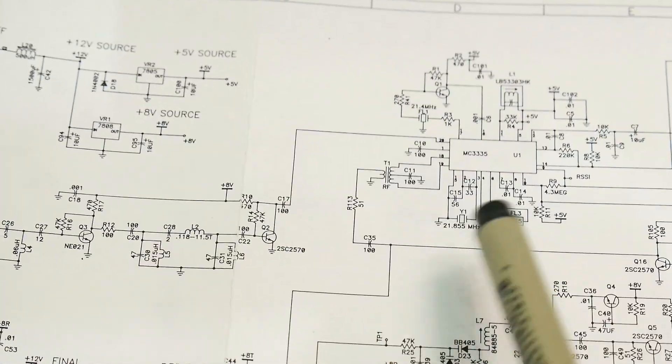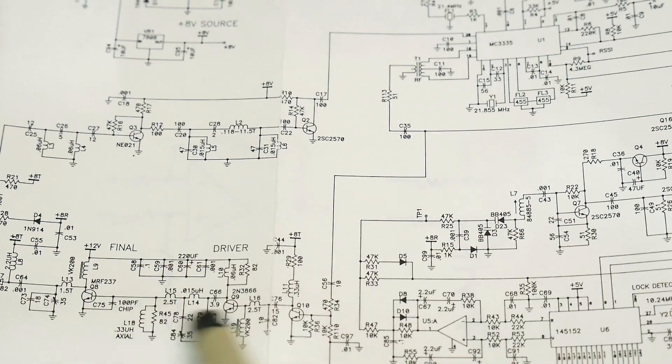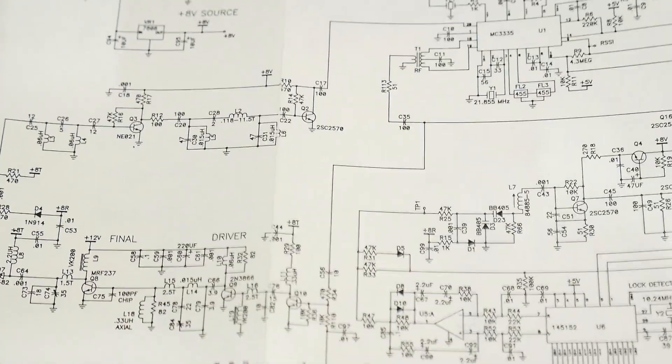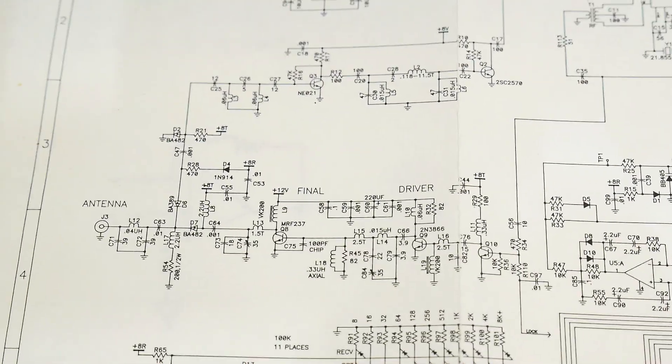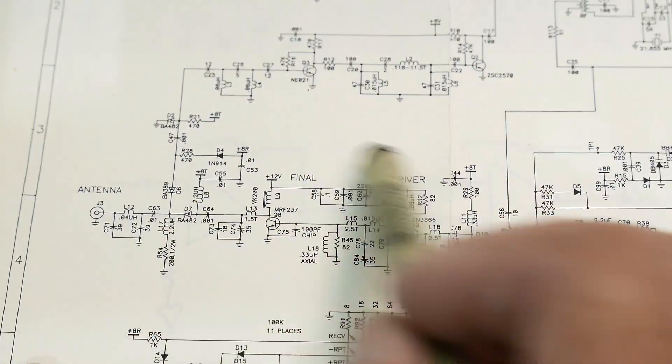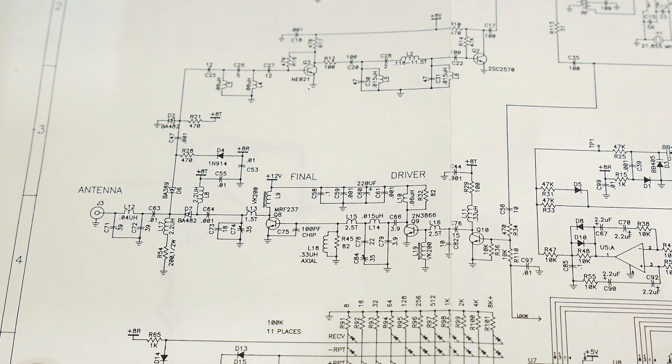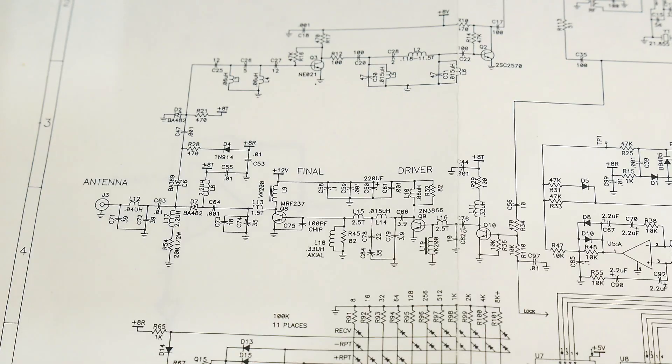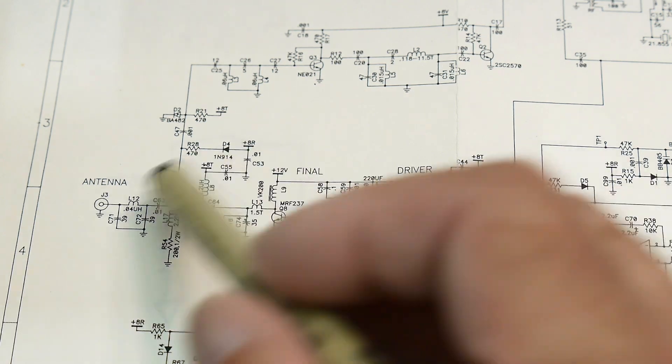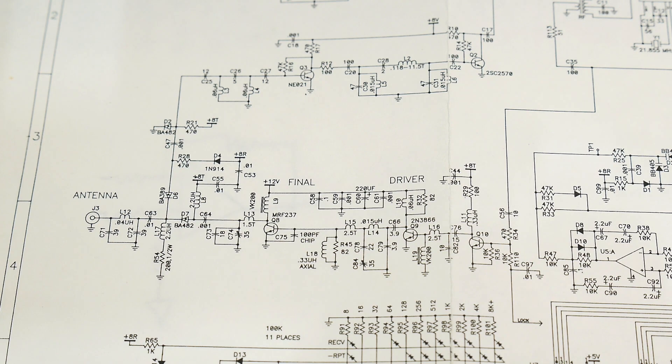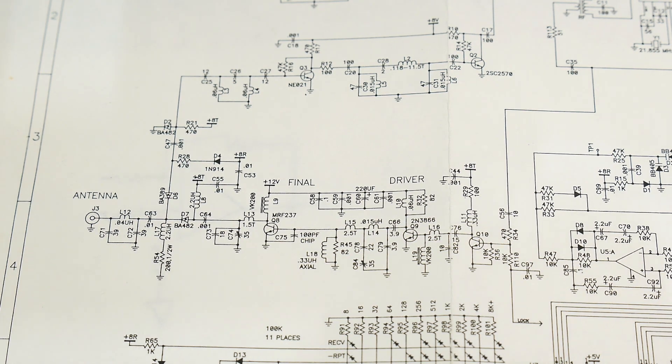It goes up here to this receiver chip and then it goes down here to the final amplifier. The final amplifier will be easy to understand, but we haven't talked about the FM modulation. We have a frequency and we have a way to transmit it. We'll go through this later, but we have a way to transmit it. How do we modulate it? Remember, this is an FM radio; we want to FM modulate it.